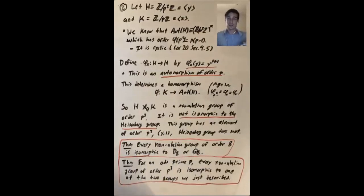For an odd prime p, again, there's three abelian groups of order p cubed up to isomorphism: Z mod p cubed Z, Z mod p squared Z cross Z mod pZ, and Z mod pZ cross Z mod pZ cross Z mod pZ.